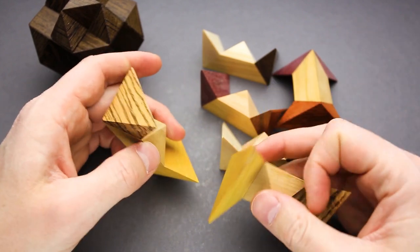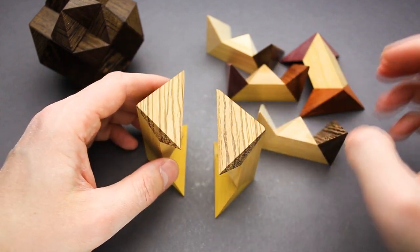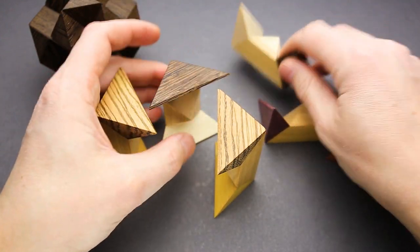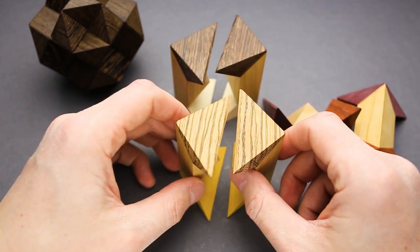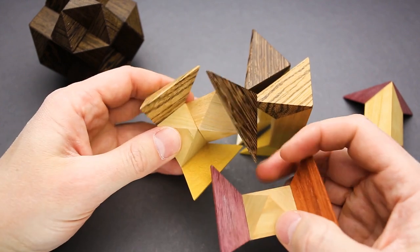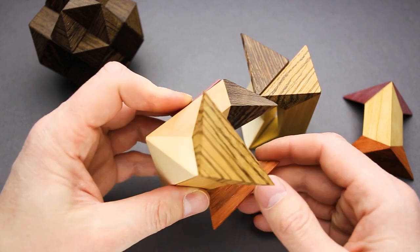Now I have to take it apart and let's assemble it back. So here I want to put both Zebrano pieces together, both Wenge pieces together and others, other pieces as well. So I have to keep it in mind when I'm assembling it back. This piece... Yeah.